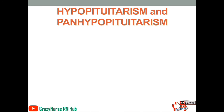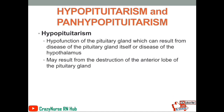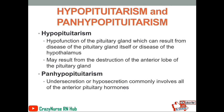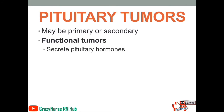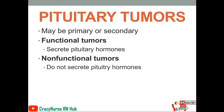Next, let's define hypopituitarism and panhypopituitarism. Hypopituitarism is the hypofunction of the pituitary gland, which can result from disease of the pituitary gland itself or disease of the hypothalamus, and it may result from the destruction of the anterior lobe of the pituitary gland. Panhypopituitarism is the under-secretion or hyposecretion that commonly involves all the anterior pituitary hormones. Now let's proceed to pituitary tumors. They may be primary or secondary, and are classified as functional tumors, which secrete pituitary hormones, and non-functional tumors, which do not secrete pituitary hormones.